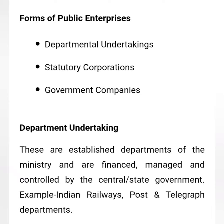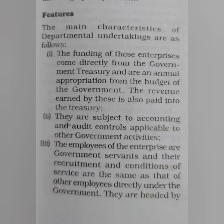Now we will talk about features of departmental undertaking. The first feature is that the funding of these enterprises comes directly from the government treasury and is an annual appropriation from the budget of the government. The revenue earned by these is also paid into the treasury — it is the investment of the government.